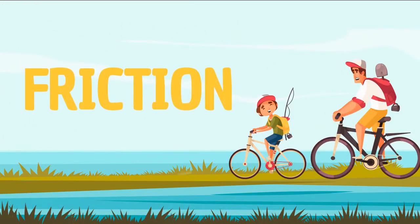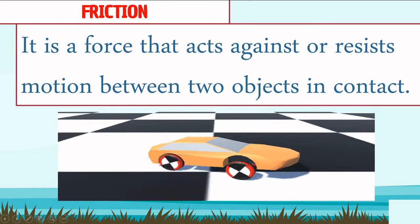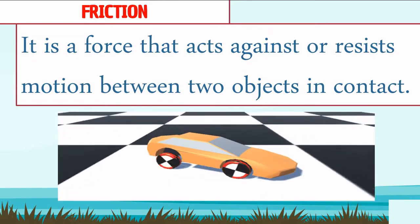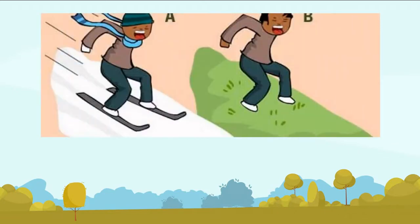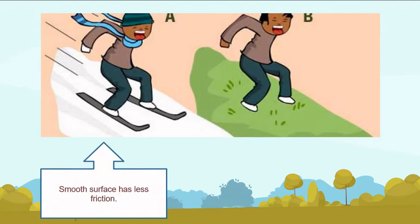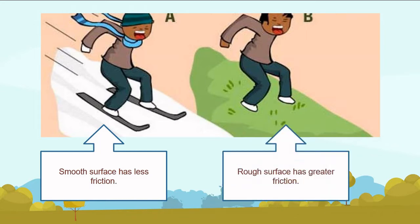Today's topic is all about friction. Friction is a force that acts against or resists motion between two objects in contact. Friction acts in the direction opposite to the motion of an object — friction either stops objects from moving or it slows objects down. There is friction when the surface of objects rolls, slides, or rubs against a surface. A smooth surface has less friction that can speed up the motion of an object, while a rough surface has greater friction and slows down the motion of an object. There is more friction if two surfaces are forced against each other.